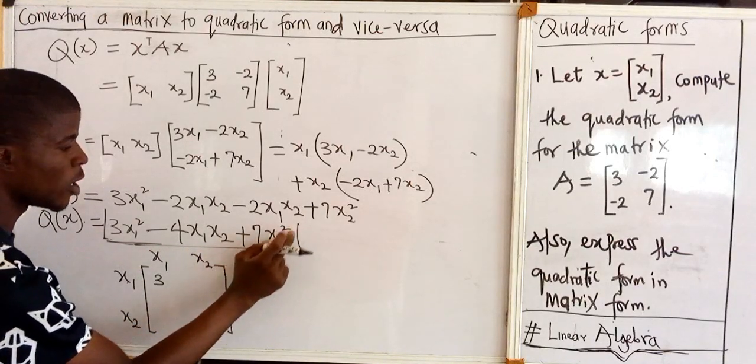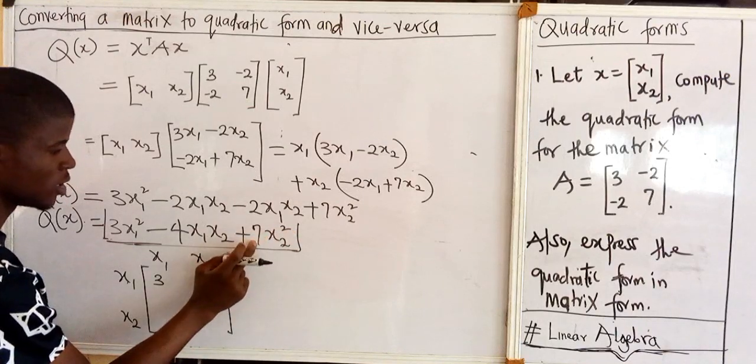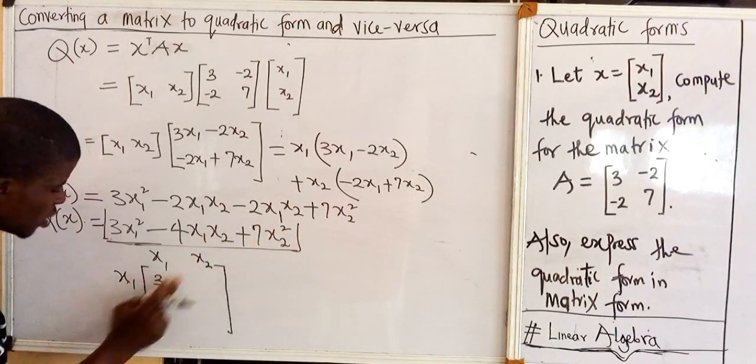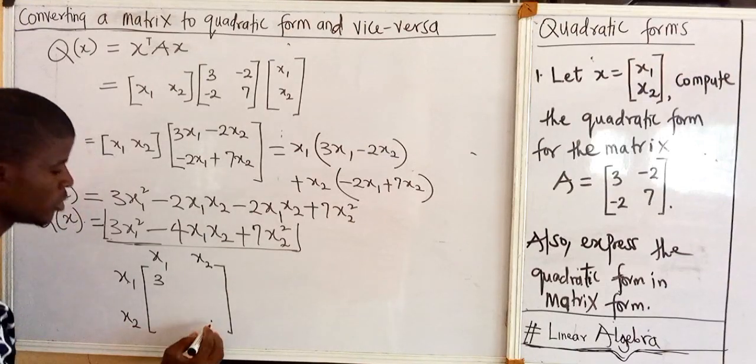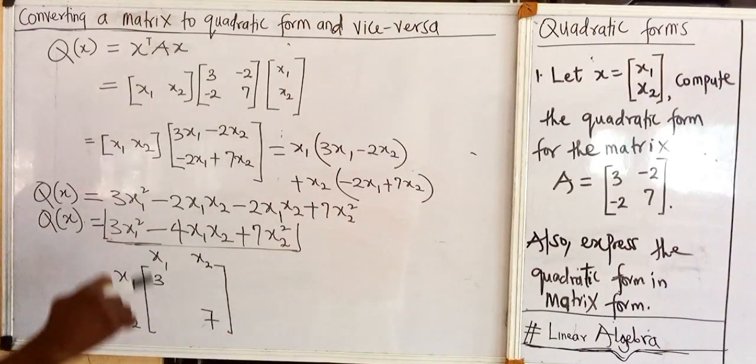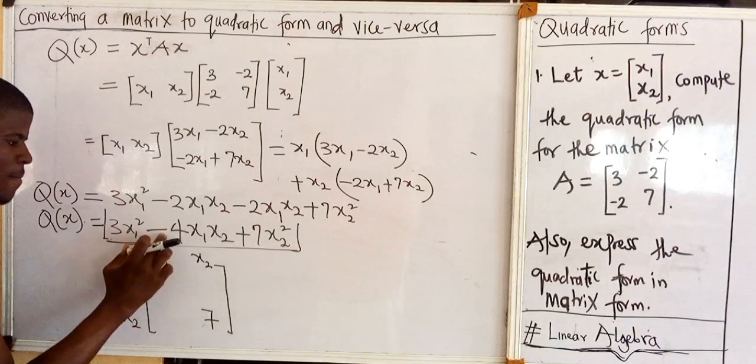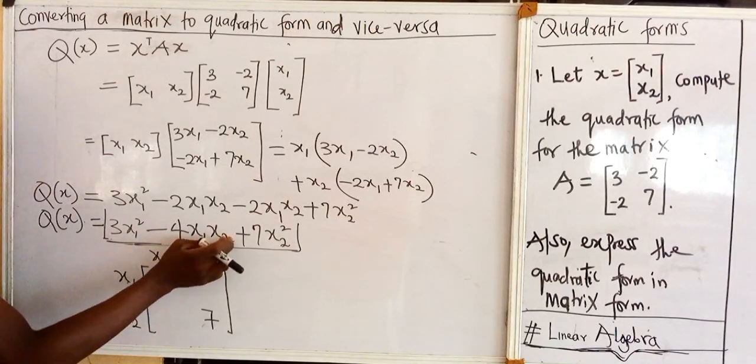x2 squared, the coefficient is 7. And x2 times x2 will give me x2 squared and that falls on this point, so here we will write 7. Now we have minus 4x1x2.